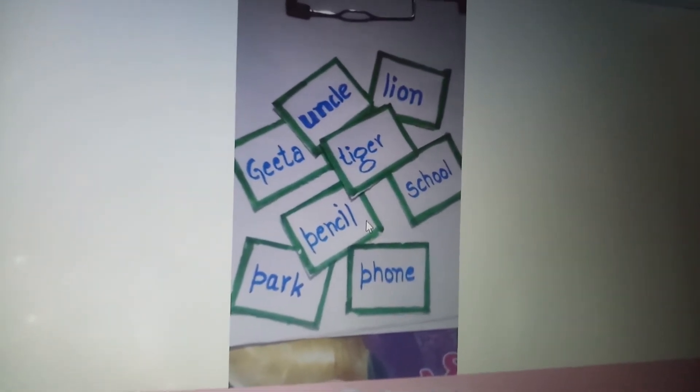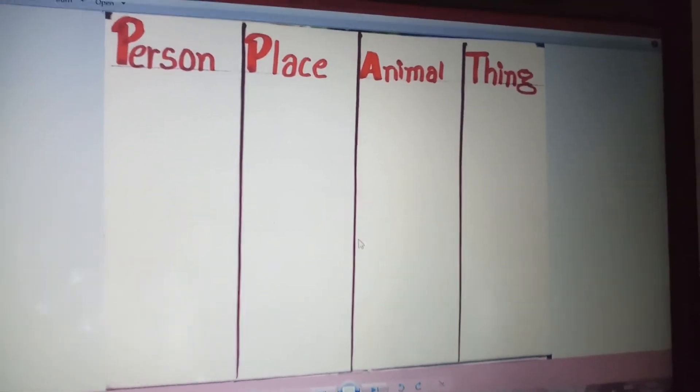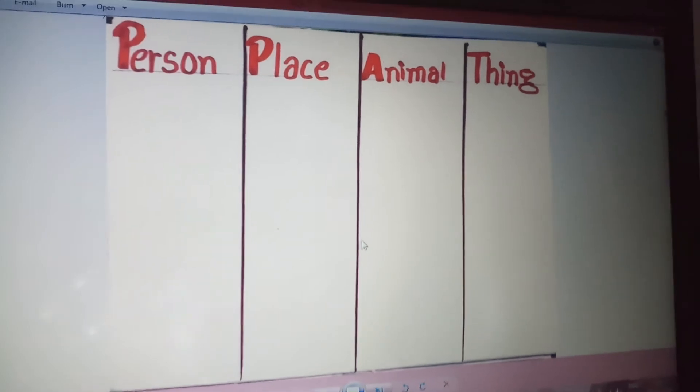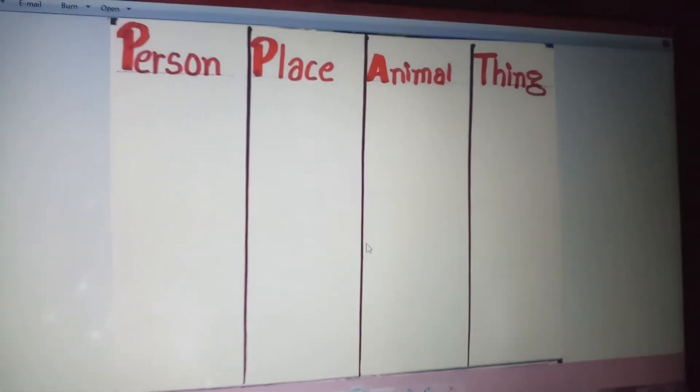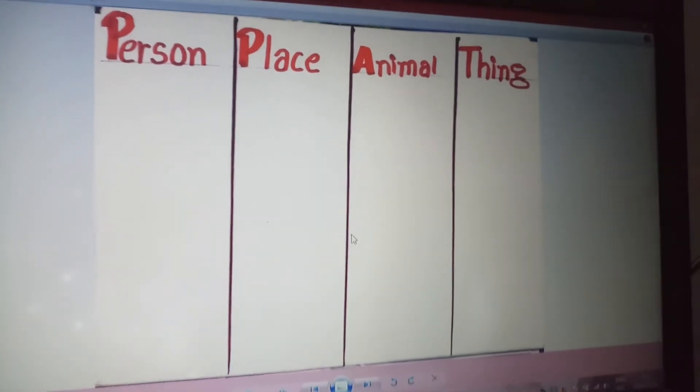And then you will separate all the slips like this. And on a paper, just draw different types of columns like this. Person, place, animal and thing.